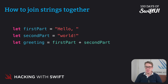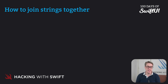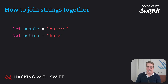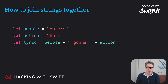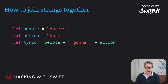You can do this multiple times, adding multiple strings. We could have something like let people equals "haters", let action equals "hate", and then let lyric equals people plus "gonna" plus action. When that runs, it'll create "haters gonna hate". Yes, I am a massive Taylor Swift fan, and I think her lyrics make a great choice for a Swift programming tutorial.